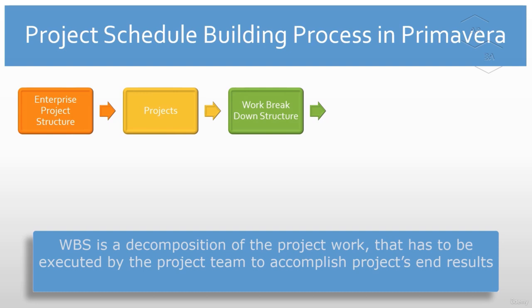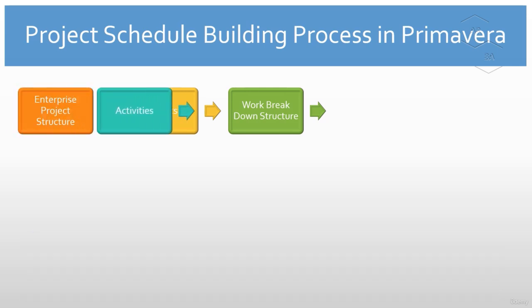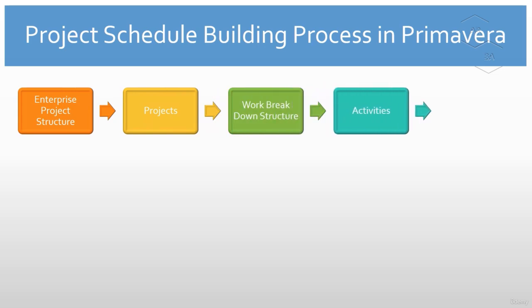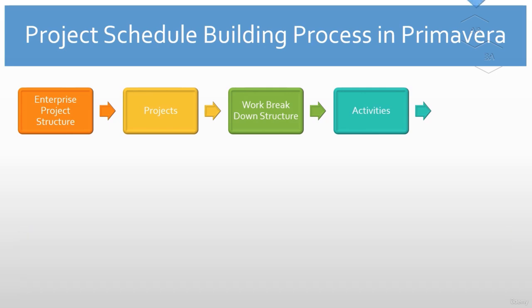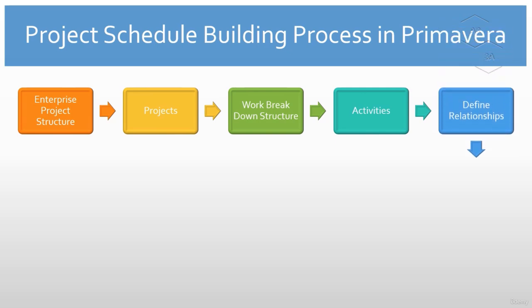The project work breakdown structure, or WBS, is created at this stage. In the next step, we create and sequence the project activities and estimate their duration under each WBS element as per our project objectives. Please note that an activity is a single unit of work which needs to be completed within its defined period of time and always has set deadlines. Next, the relationship between activities — such as finish to start, start to start, start to finish, or finish to finish — is defined.